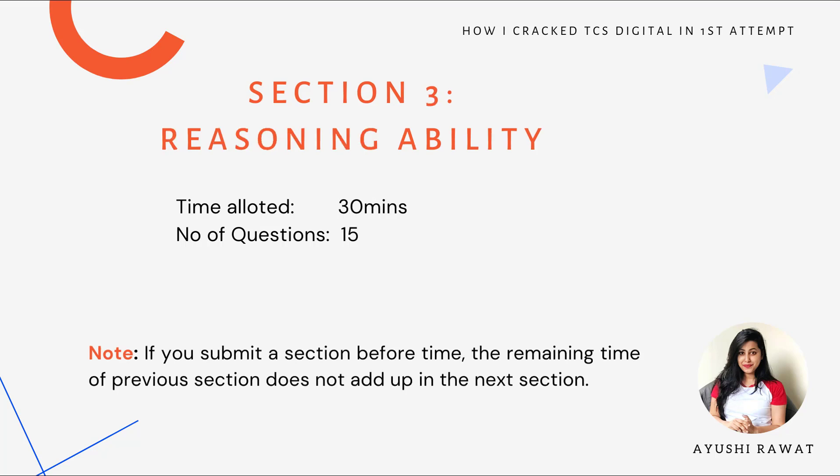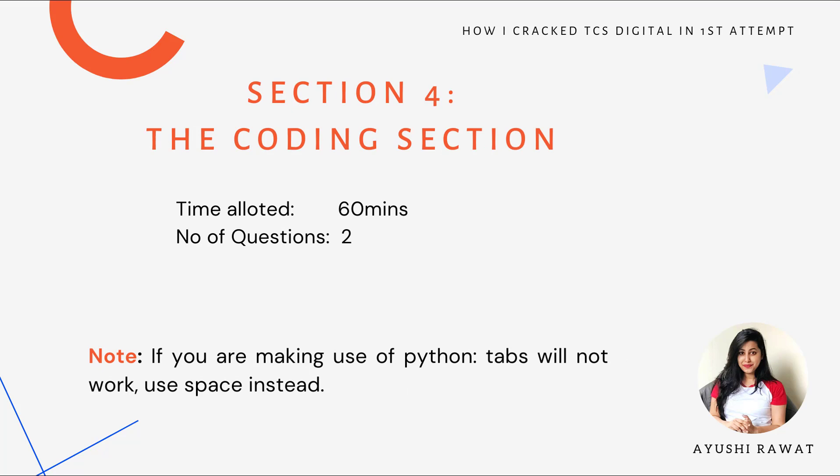Section 3: Reasoning ability. This section will contain 15 questions and you will have to solve all of them within 30 minutes. This section contains logic-based questions like identifying the pattern or the next number in the series, relationship or age-based questions. This also requires practice, but you will have ample time to attempt all the questions. Please note that if you submit a section before time, the remaining time from the previous section will not be added to the next section.